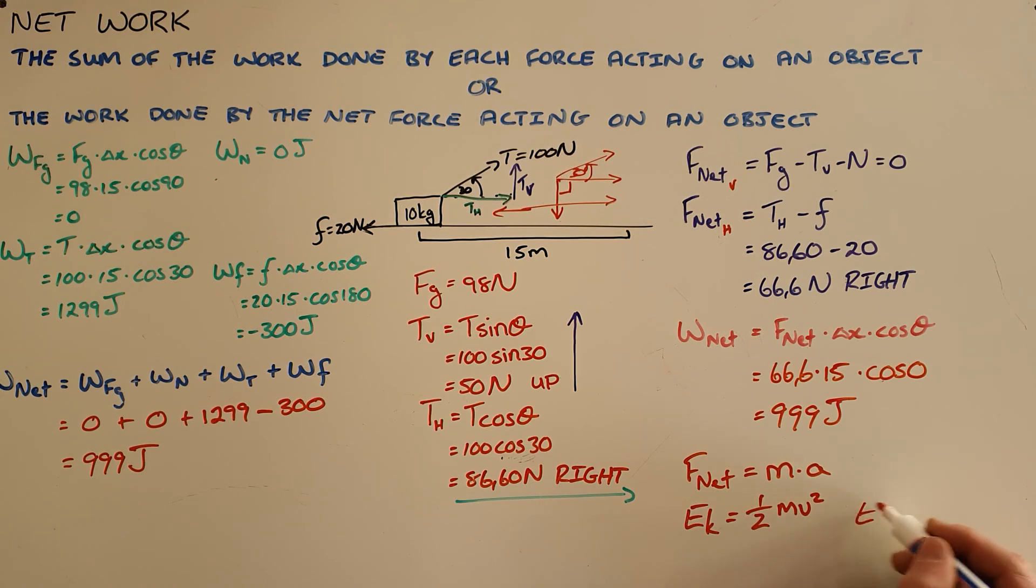We know that the potential energy of an object is dependent on the mass of that object and its height above the earth's surface. So when we are doing work on an object, we are normally adding energy, and that energy can be added in one of two forms.